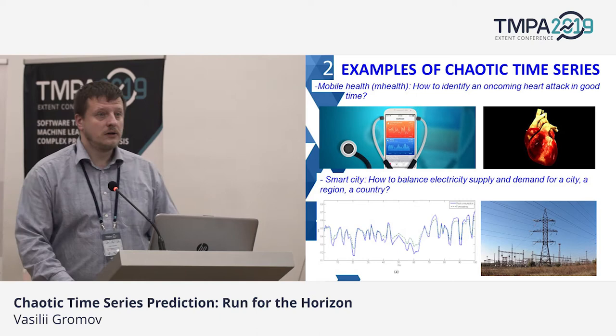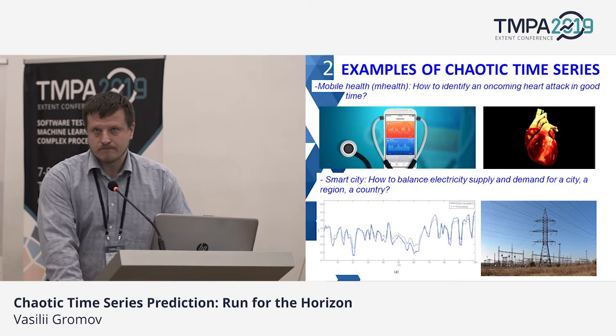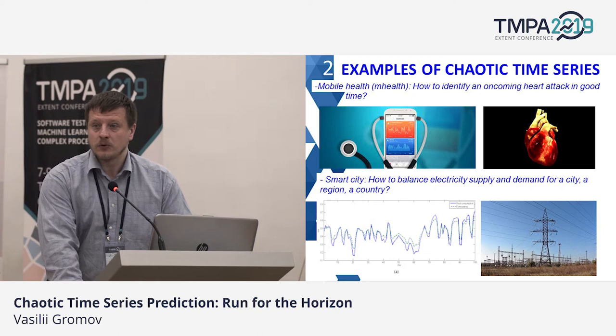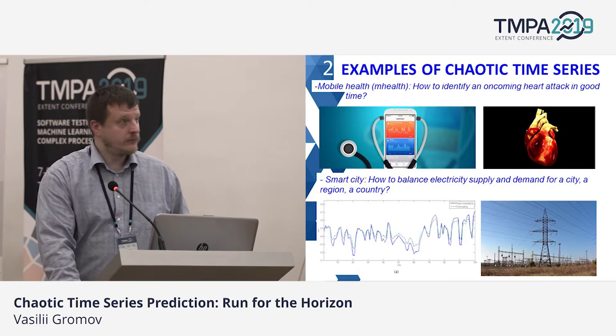The first application is the heartbeat. It's really a chaotic time series, and so chaos is not only around us — it's just inside us. The straightforward application of predicting such chaotic series is what is used in mobile health programs, mobile health software. Strikingly, such problems as heart attack and brain injury can be avoided in 90% of cases if a person is alerted just in time.